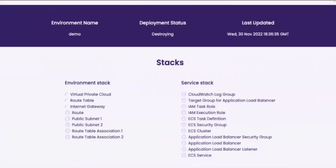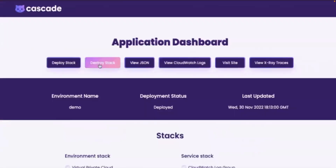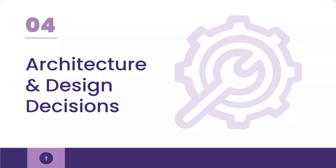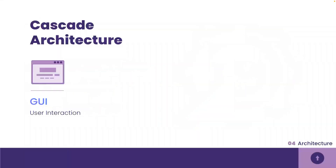Now Natalie is going to take us through the design decisions and architecture that made this all happen. How did we accomplish automating the deployment of users' containerized applications with observability? The first piece of our architecture is our graphical user interface, or GUI, that we just saw demoed. In line with our main goal to make the deployment process simple, we wanted to provide an intuitive GUI that serves as a central place for users to prepare, deploy, view, and destroy their containerized applications. The dashboard of the GUI is where users can view each step of the deployment process all in one view, eliminating the need to visit various interfaces on AWS to achieve the same.